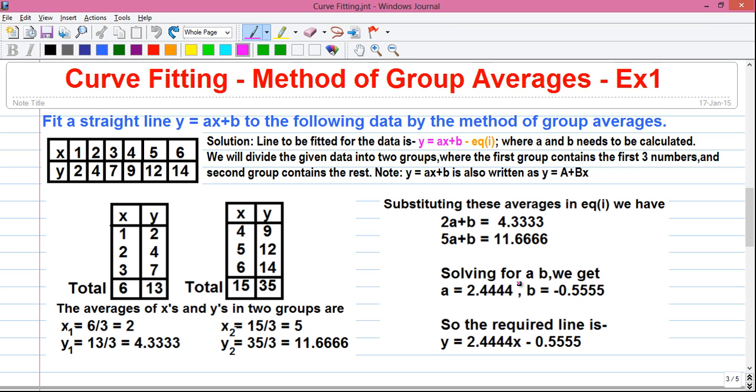So by solving for a and b we get a equals 2.4444 and b equals minus 0.5555. So we have got the values of a and b and now we can frame the equation. So the required line or the equation of the line is y equals ax. a is 2.4444 into x plus b and b is minus 0.5555. So the equation of the line is y equals 2.4444x minus 0.5555.